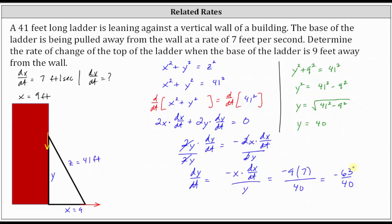And again, this is measuring the change in Y with respect to time in seconds, and Y is measured in feet. The units here are feet per second. So now we know the change in Y with respect to time is negative 63 fortieths feet per second, or Y is decreasing at a rate of 63 fortieths feet per second under the given conditions.